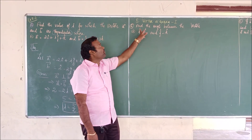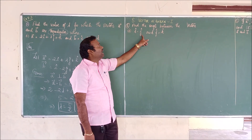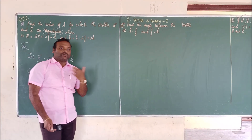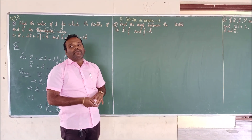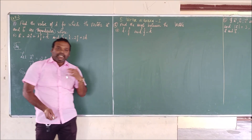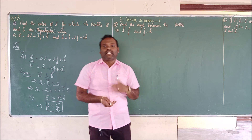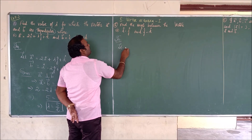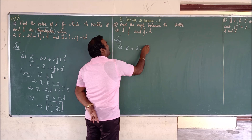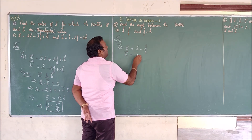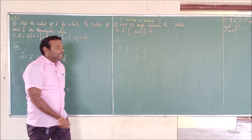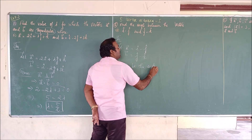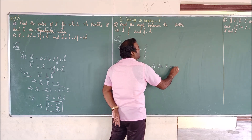Now we are going to see the third problem: find the angle between the vectors i cap minus j cap and j cap minus k cap. We already have the formula to find the angle between two vectors: cos theta equals a vector dot b vector divided by modulus a vector times modulus b vector. Let a vector equal i cap minus j cap, and b vector equal j cap minus k cap. Let theta be the angle between a vector and b vector.